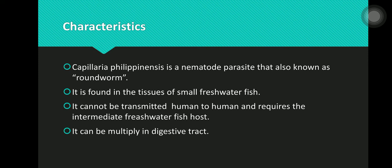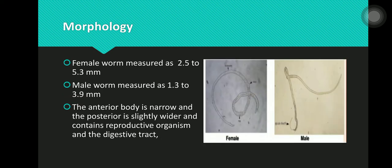Capillaria philippinensis is a nematode parasite also known as roundworm. It is found in the tissues of small freshwater fish. It can be transmitted from human to human and requires an intermediate freshwater fish host. It can multiply in the digestive tract.